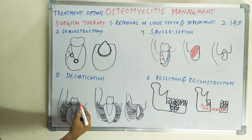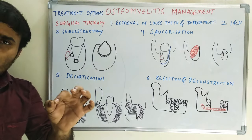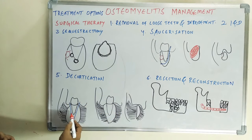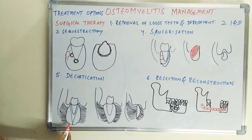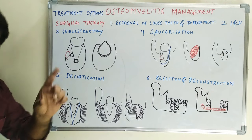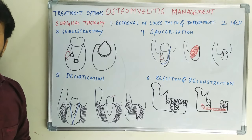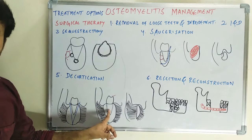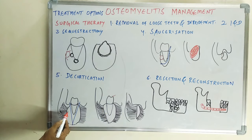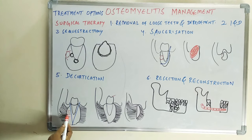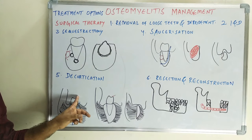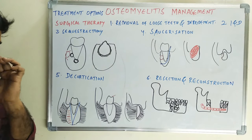The blue lines in the diagram show the lines of section — removal of the lateral cortex along with the lower border of the mandible. When there is no need to remove the tooth, only this amount of bone is removed, still involving the lateral cortex and lower border.